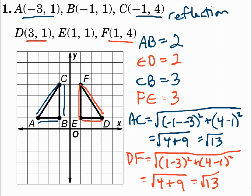Remember: to identify the type of transformation — if it's just sliding over, that's a translation; if it's turning around, it's a rotation; and if it's flipping over making a mirror image of itself, then it's a reflection. To verify that it's a congruence transformation, find the length of each side. For a horizontal or vertical side you can just count the distance, but if it's a diagonal, remember to use the distance formula. Once you've shown that all the side pairs are congruent, then you're done.